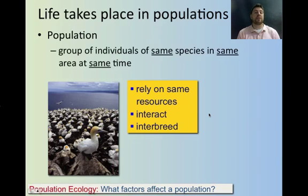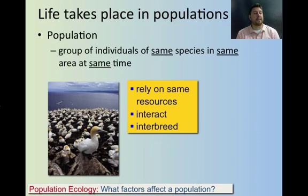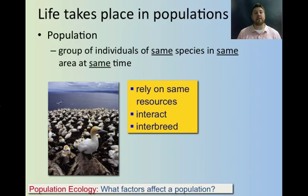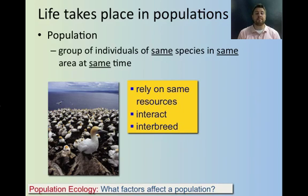What's a population? A population is a group of individuals of the same species, same place, same time. Because they're the same species, they're relying on the same resources, interacting together, and interbreeding. Remember, the biological definition of a species is two individuals that can interbreed and produce fertile offspring together.